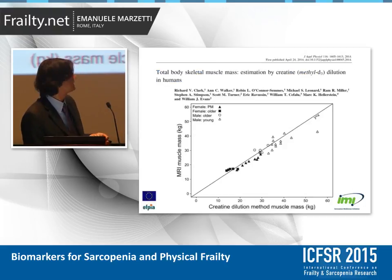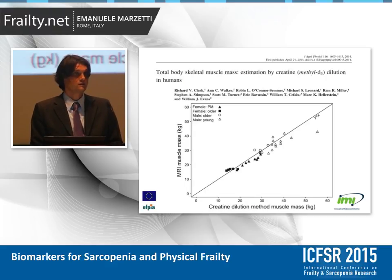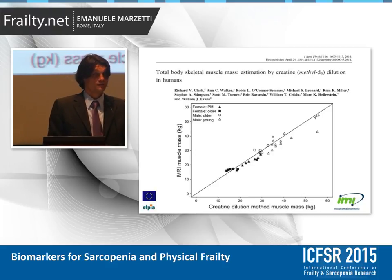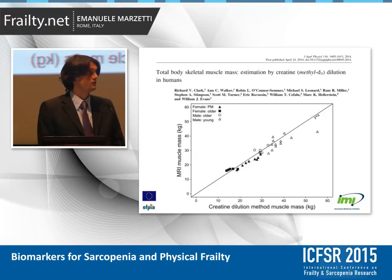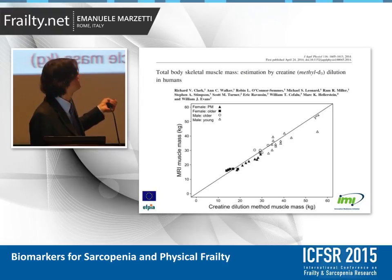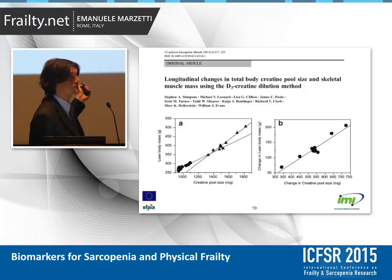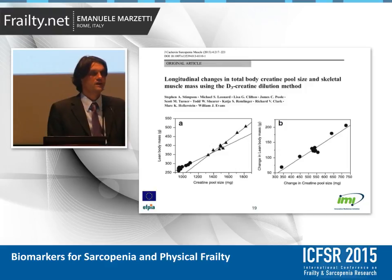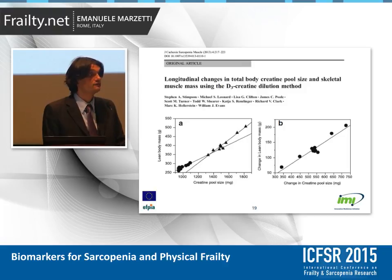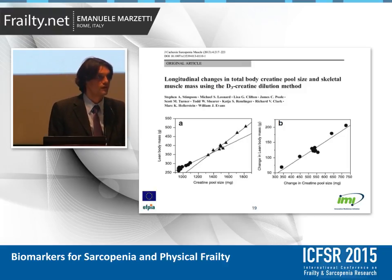The D3-creatine dilution method is a special biomarker. It does not tell us anything about what is going on in muscle in terms of function, but it provides a highly reliable estimation of total body muscle mass — the agreement with MRI-derived muscle mass is virtually perfect, and the sensitivity to changes is amazing. The two main drawbacks are that it provides an estimation of total muscle mass rather than appendicular mass, and it provides no information about why muscle mass may be reduced.